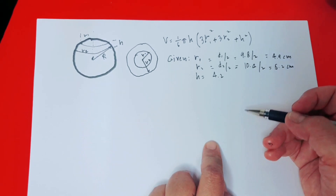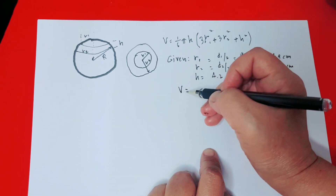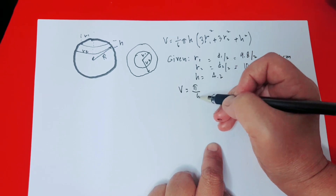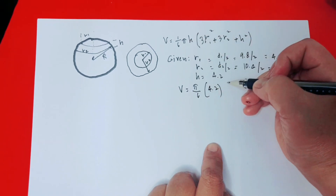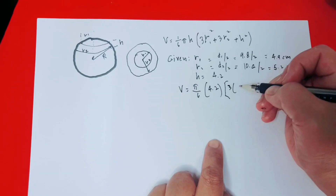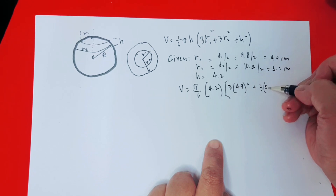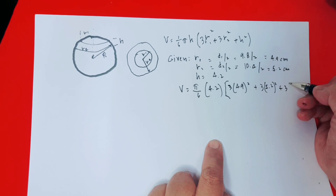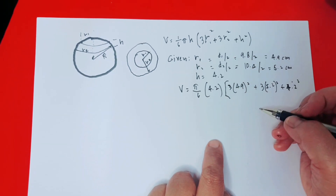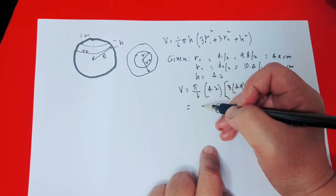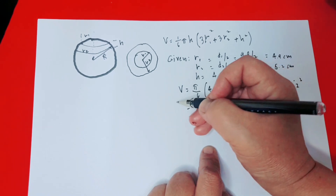The height is 4.2, so substituting all these values: Volume equals (π/6) times 4.2, times the quantity 3 times 4.9 squared, plus 3 times 5.2 squared, plus 4.2 squared. Simplifying, the volume equals 375.9 cubic centimeters. This is the volume.